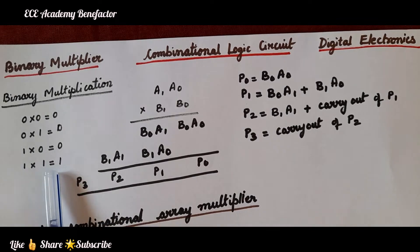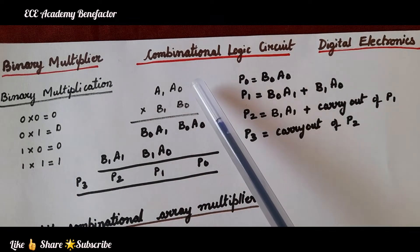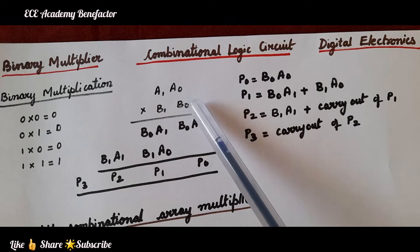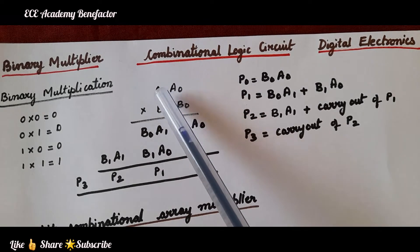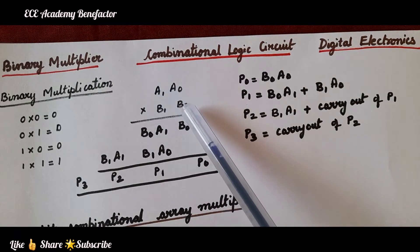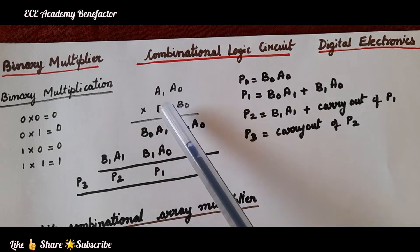As we are going to design a 2 cross 2 bit multiplier, let us take two binary numbers A and B. A comprising of two bits a1 a0, and the second binary number B is comprising of two bits b1 b0.